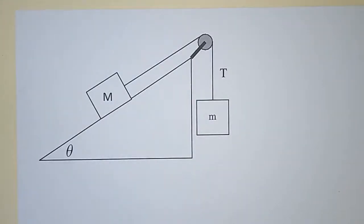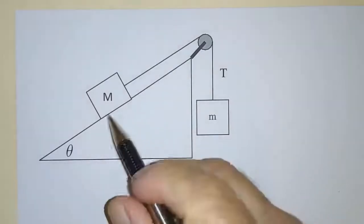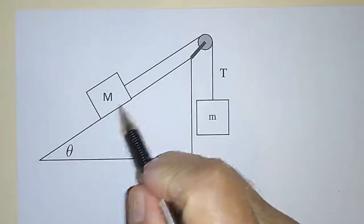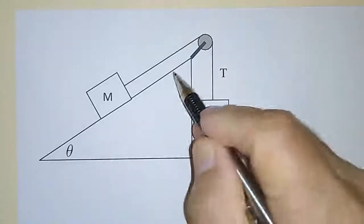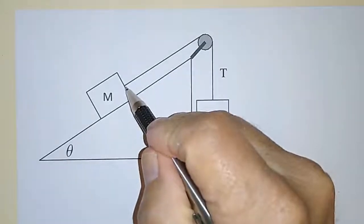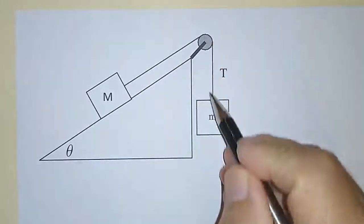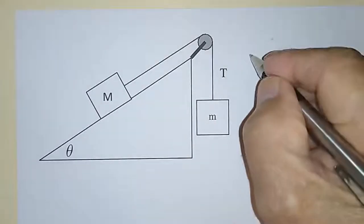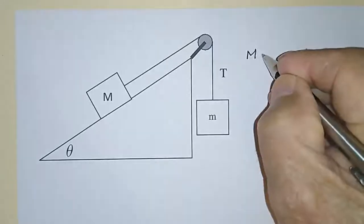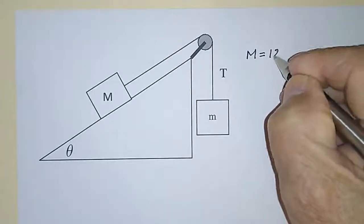This little video is to show you how to handle a situation where you have a mass, big M, sitting on a frictionless plane like this, attached with a massless cord around to another mass that's hanging like this, and you want to find out the relationship between these masses. Let's say, just for the purposes of discussion, that the mass, big M, is equal to 12 kilograms.